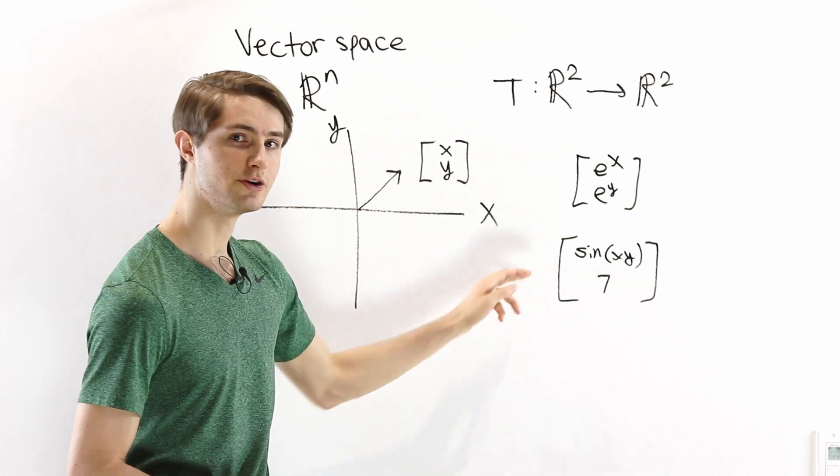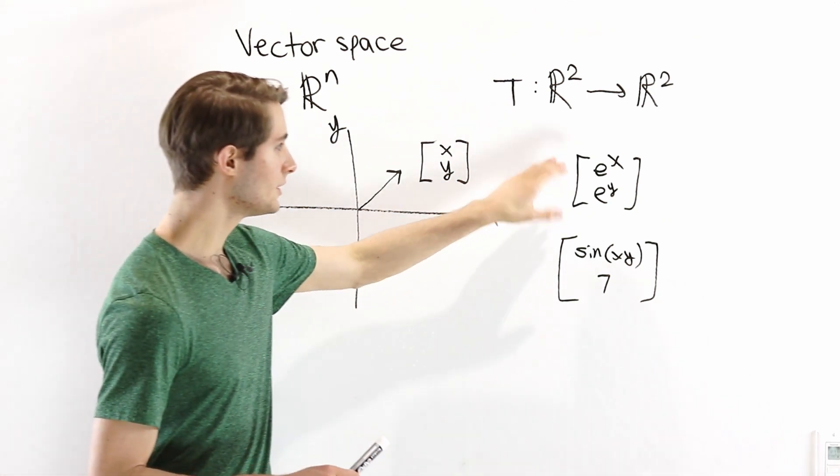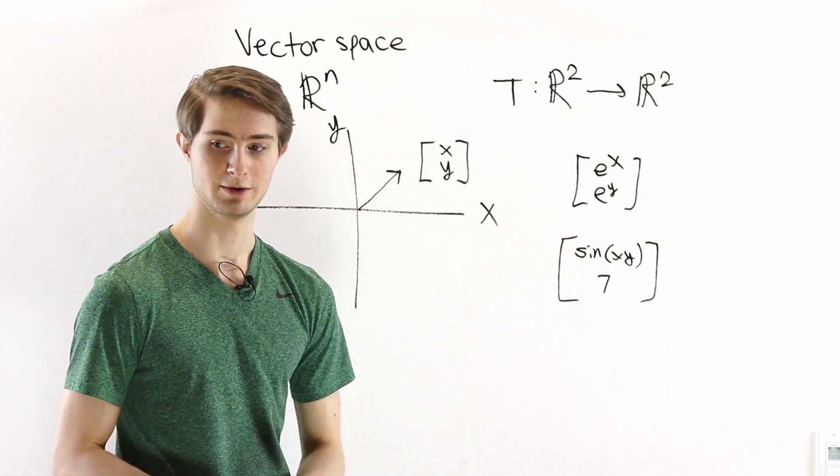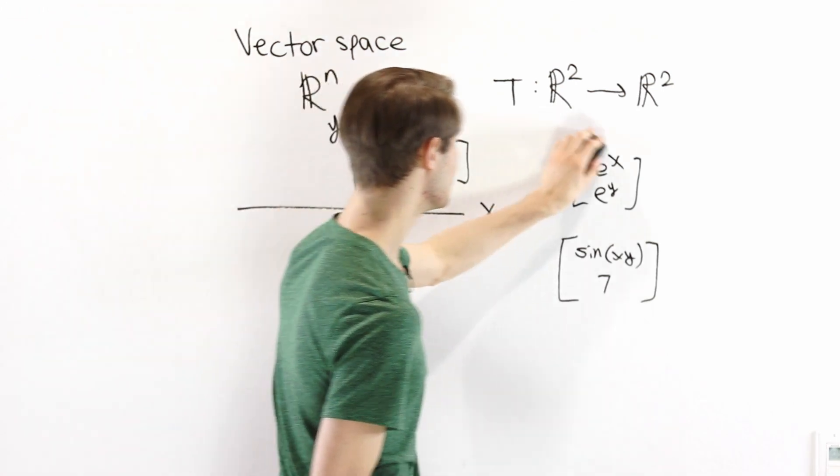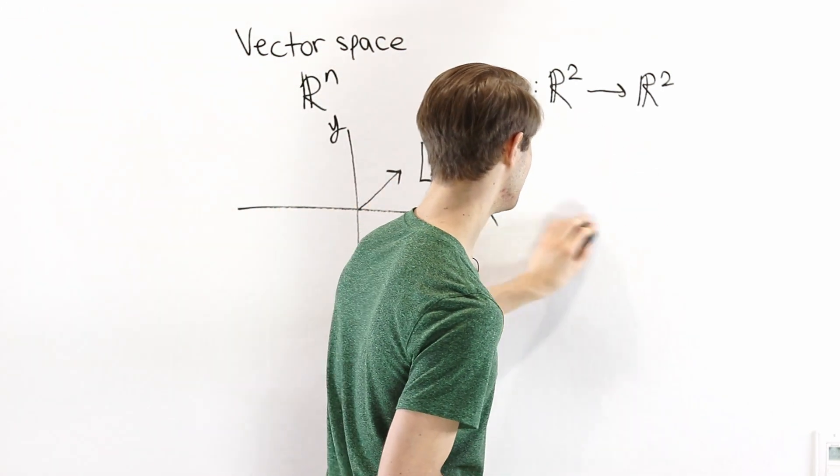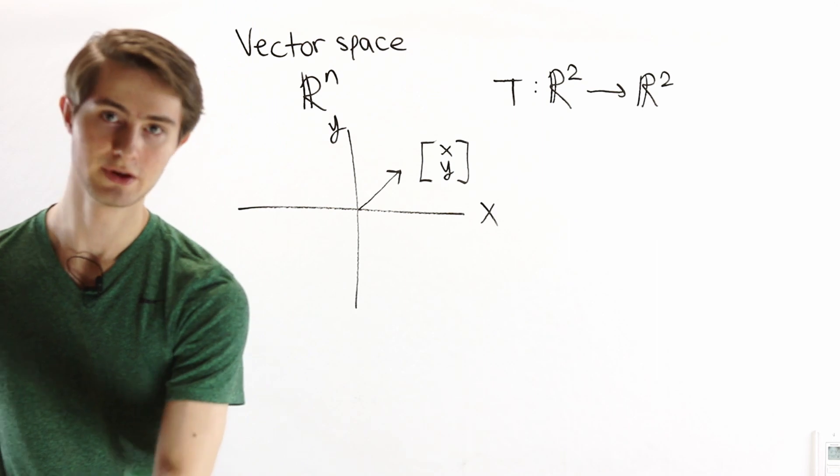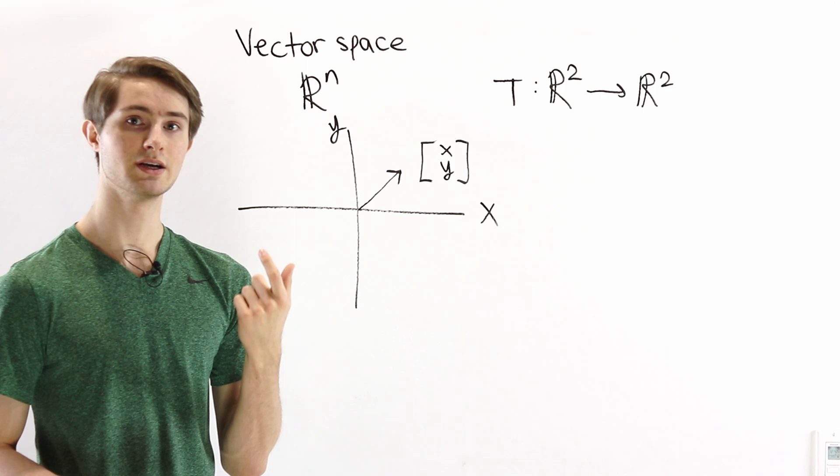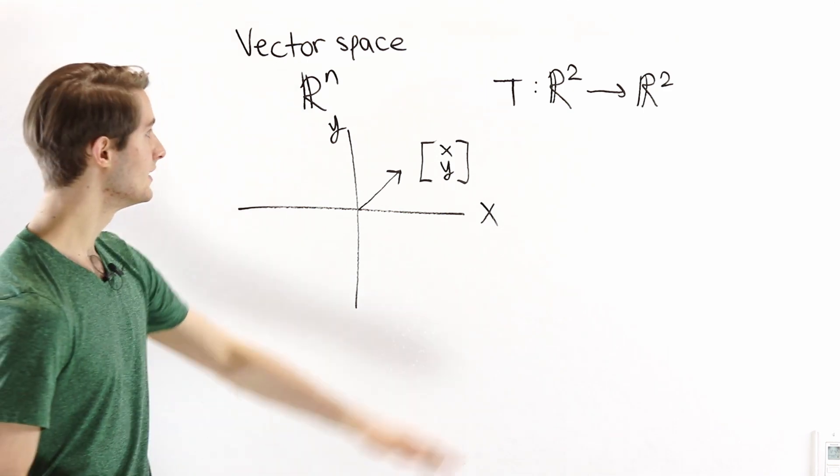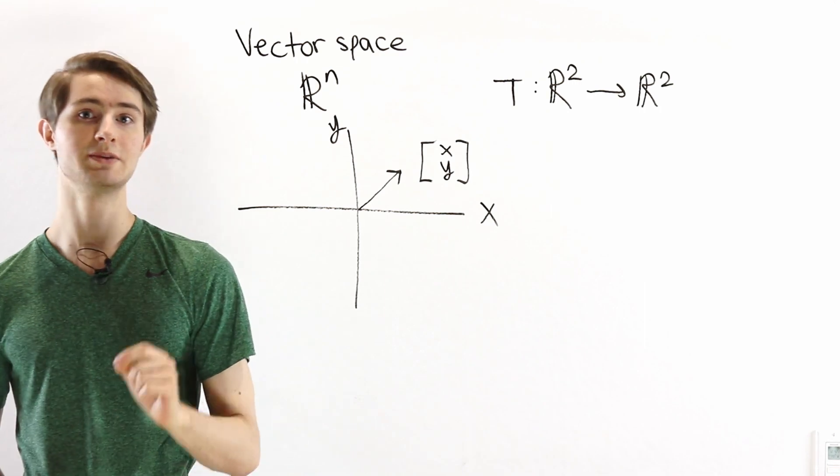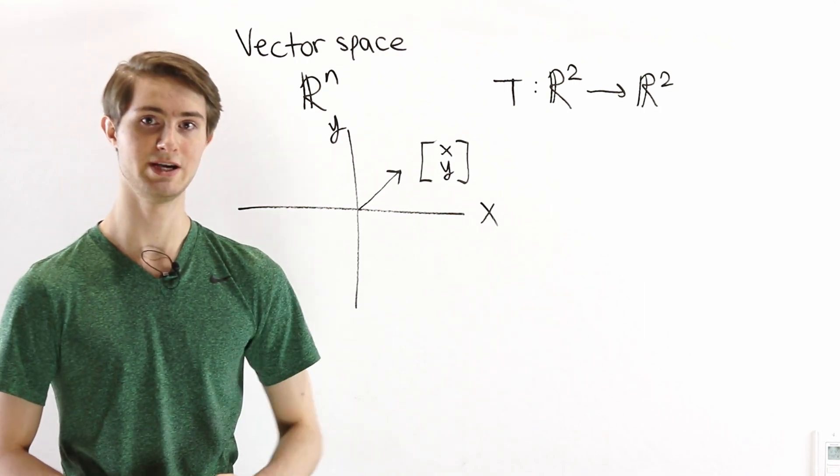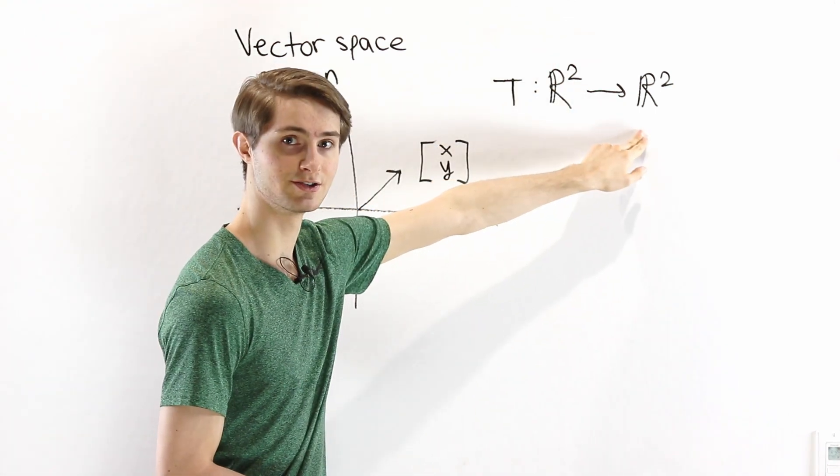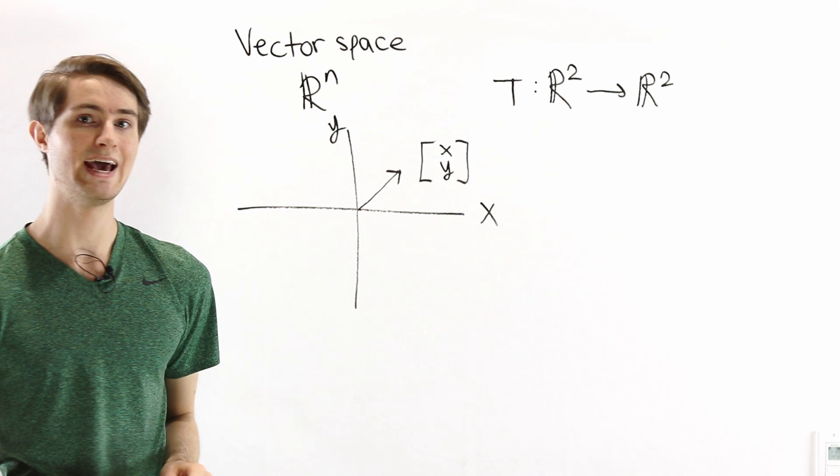But these two aren't very similar, so there's not really a way to study both of these at the same time and get useful information about both of them. So in order to talk about a lot of different functions while still being able to say things that are useful, we want to restrict the type of function we're looking at to something a lot more simple. And the way that we do that is by requiring our function to be something called a linear transformation.